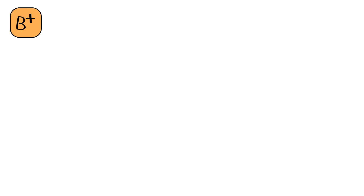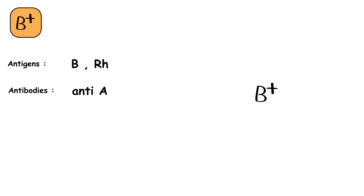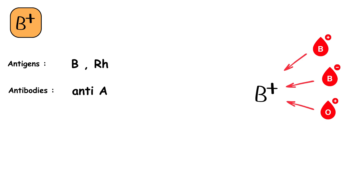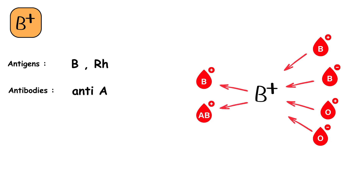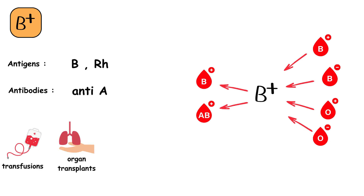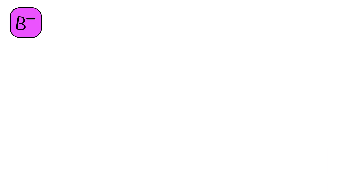B positive blood type has B and RH antigens on the red blood cells and anti-A antibodies in the plasma. These individuals can receive blood from B positive, B negative, O positive, and O negative donors. They can donate blood to B positive and AB positive recipients. This blood type is useful in transfusions and organ transplants within its compatibility constraints. B positive blood type is present in about 8% of the global population.